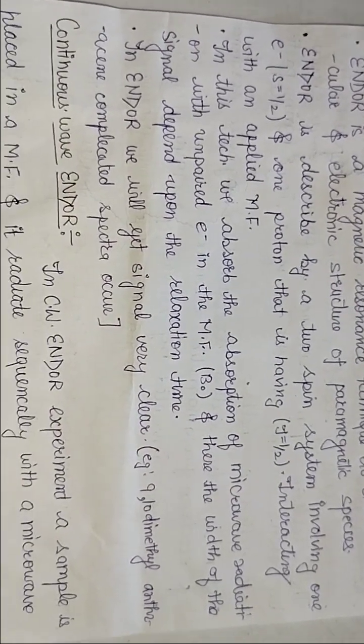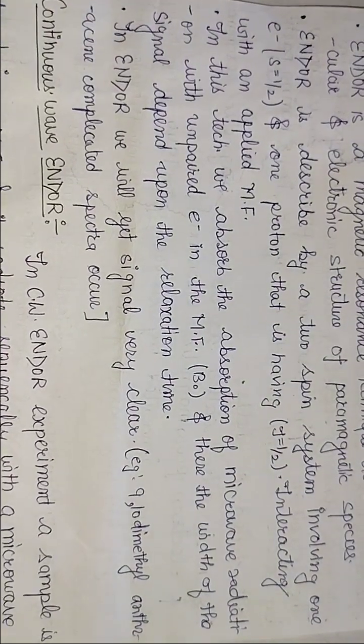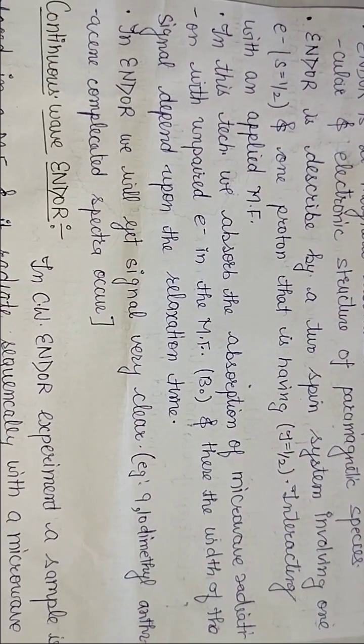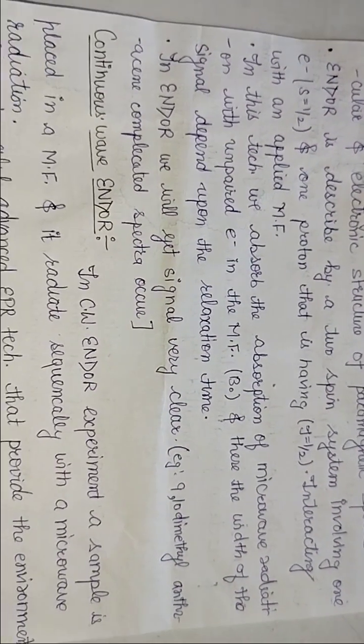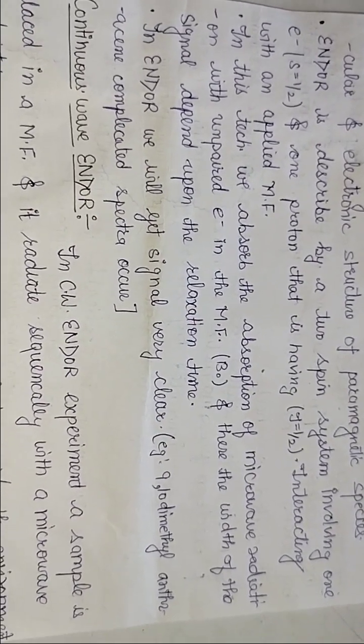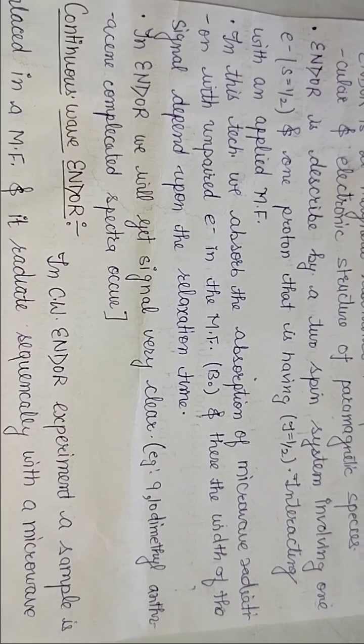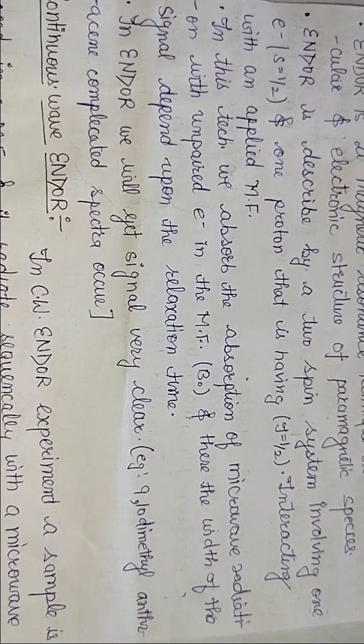ENDOR is described by two spin systems: one is electron and one is proton, and they are interacting when applied with the magnetic field. ENDOR signals are very clearly defined. For example, if we talk about 9,10-dimethylanthracene, with ENDOR we have to follow the procedure and get clear signals.